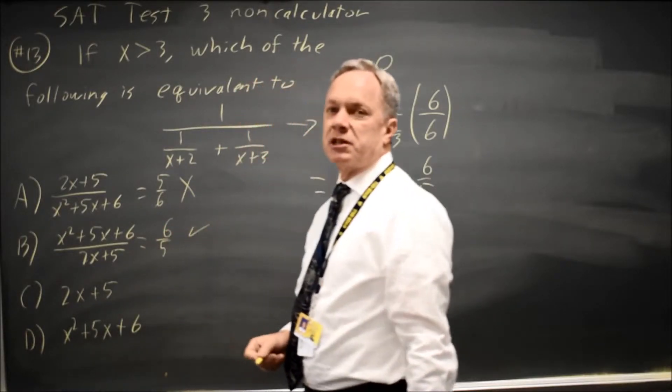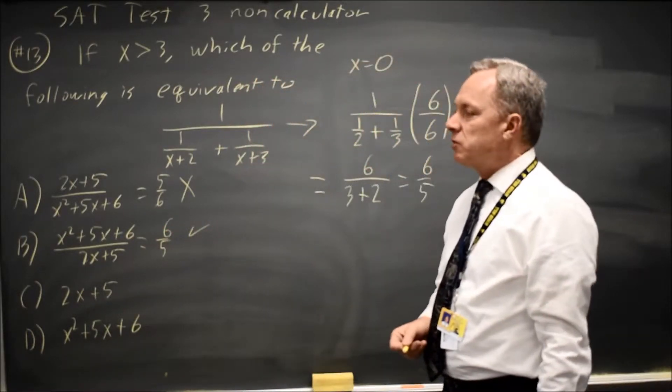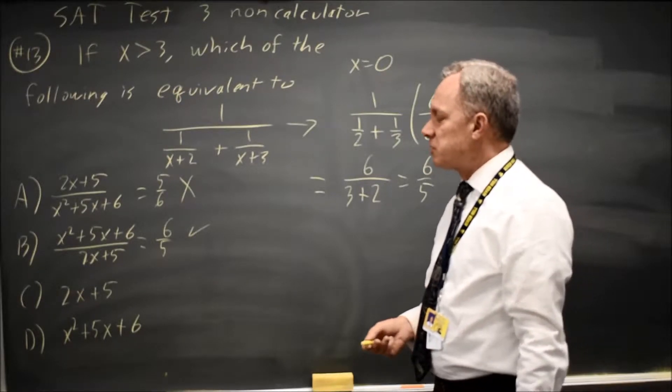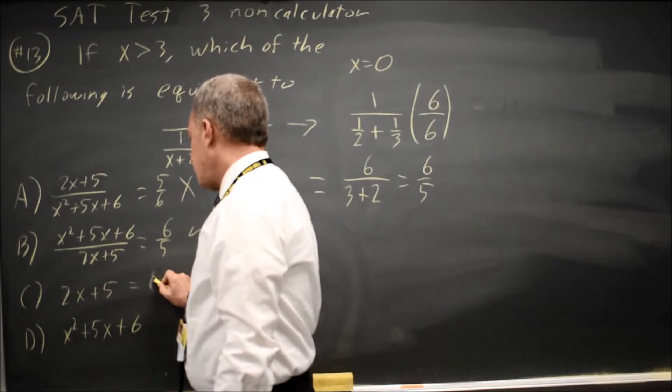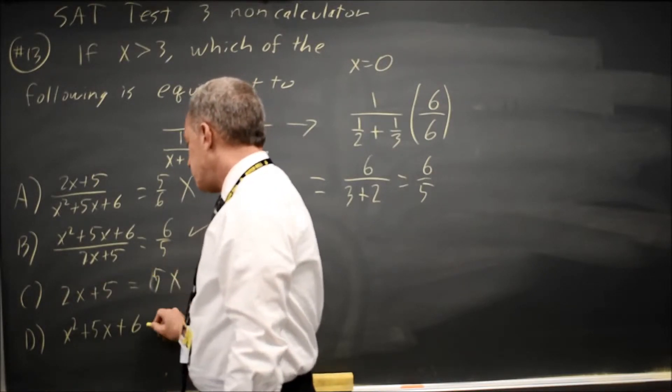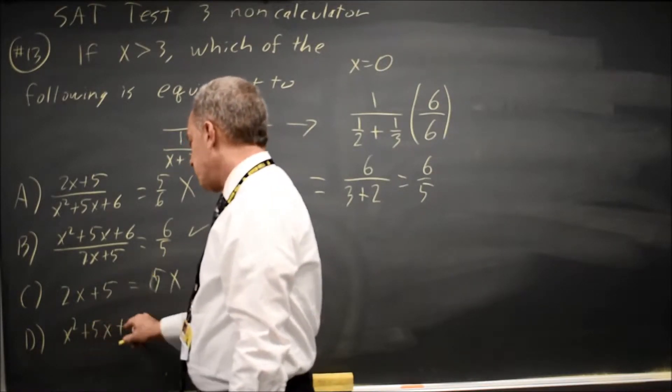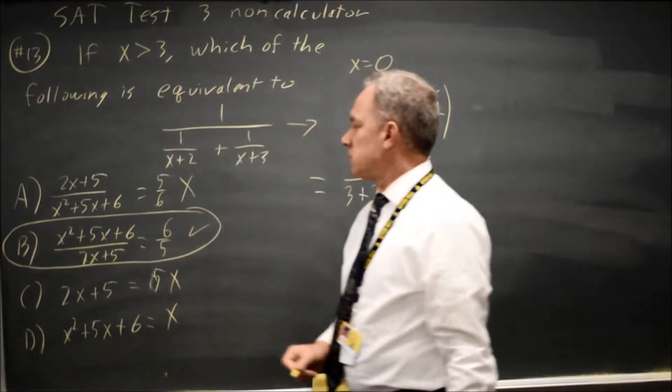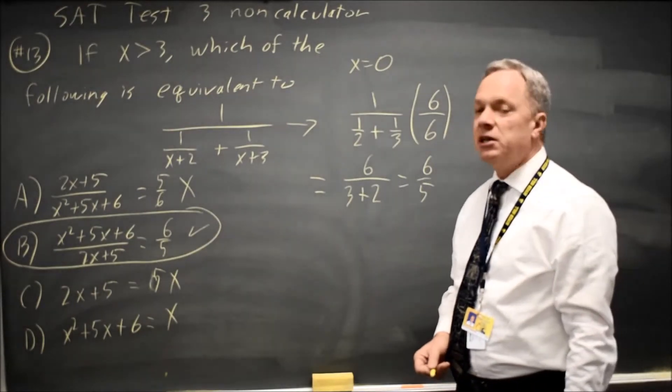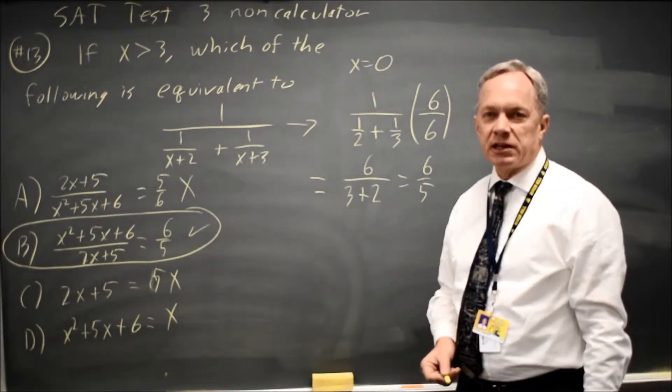That matches, but that does not mean it's the correct answer, because something else might match when you're just making up numbers. However, choice C is 5, which is wrong, and choice D is 0 plus 0 plus 6, which is wrong. The only choice that matches at x equals 0 is choice B, so that must be correct for all x.